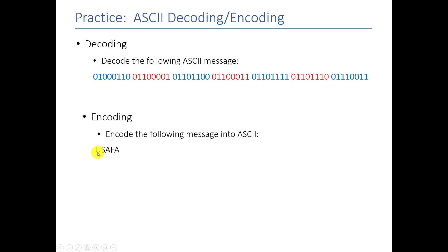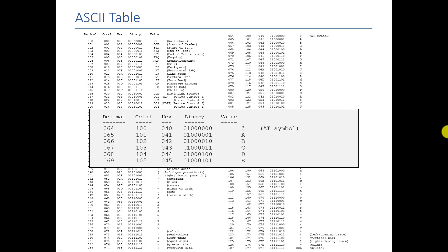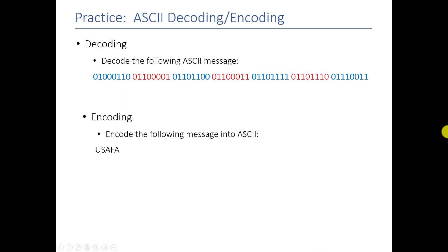And encoding is even simpler. All we have to do is take each one of these letters, go back, and find the corresponding one. So if I wanted to do a capital U, it would be this pattern over here. So this one's fairly simple. It just takes time. I wouldn't ask you to ever remember the table. If we ever wanted you to decode something, we would give you the table.